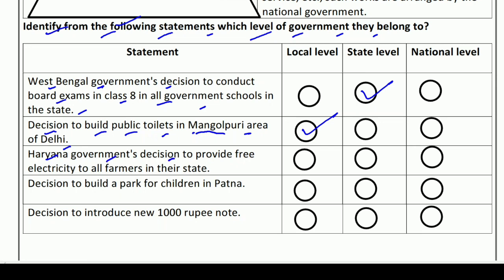Haryana government's decision to provide free electricity to all farmers in their state — Haryana government ka naam aage hai, that means state level. Decision to build a park for children in Patna — Patna is the capital of Bihar — so who will take this decision? State level. Then, decision to introduce a new 1,000 rupee note — ek hazaar rupaye ka new currency kaun introduce karta hai? Local level? State level? The right answer is national level.